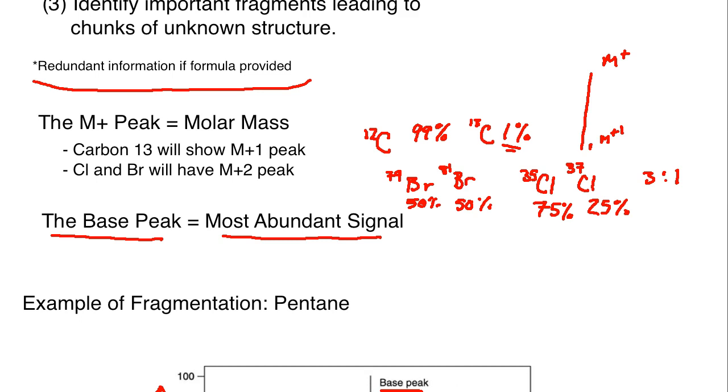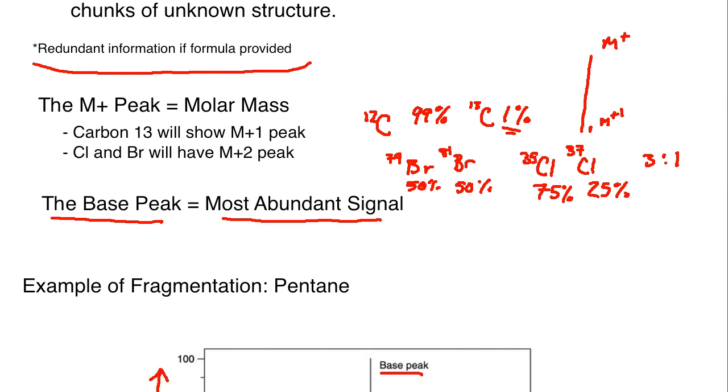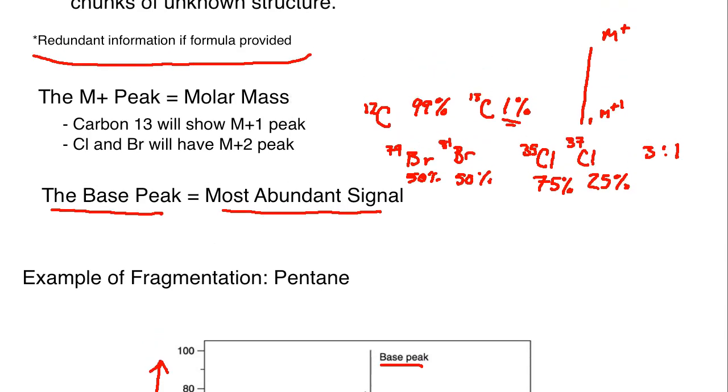When you have certain fragments that are more stable than other fragments, specifically if we're talking about positive charges, then you are going to end up with base peaks with the most common, the ion that's occurring most often, and therefore it's going to be the most stable ion. I have a video and I will link it at the end of this particular lecture, and it goes into a little bit more detail about M+ peak versus base peak. It's a pretty simple concept to grasp once you understand, but I'll link that at the end of this video.